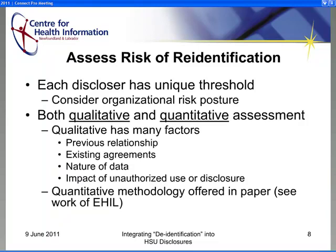You might also want to consider what the impact would be if there were an unauthorized disclosure or a breach. On the quantitative side, that's where research from the Electronic Health Information Laboratory really comes into play — measuring risk of re-identification mathematically using concepts like k-anonymity, looking at outliers, population counts, geographies, and all that sort of stuff. The best practice guidelines go very deep on this topic, and I'd encourage you to take a look if you want to do a deeper dive.